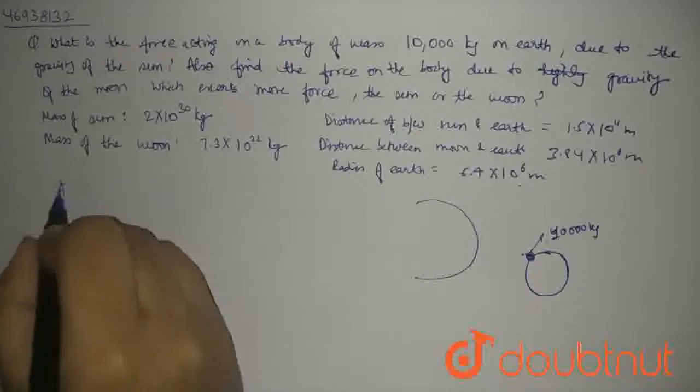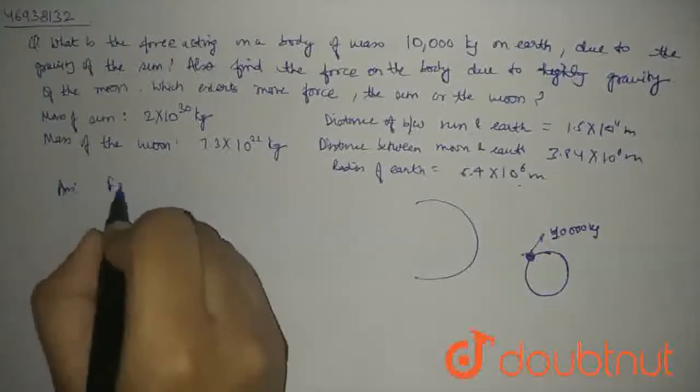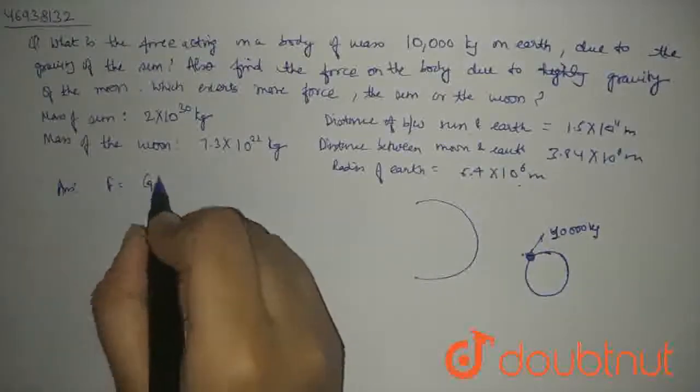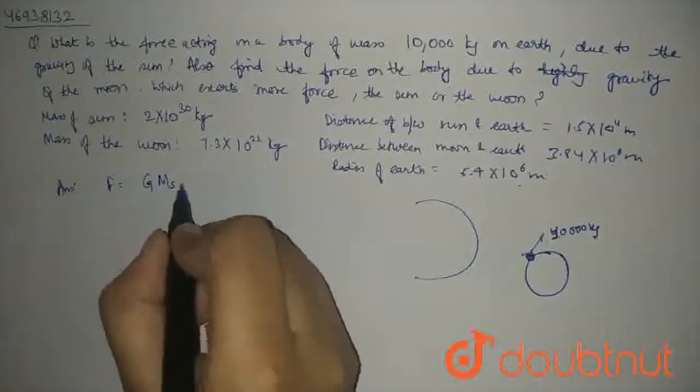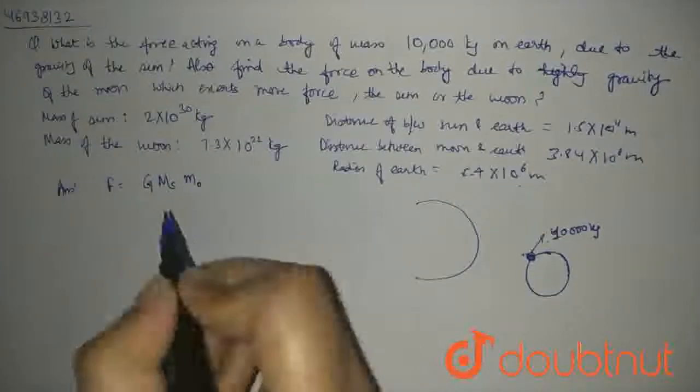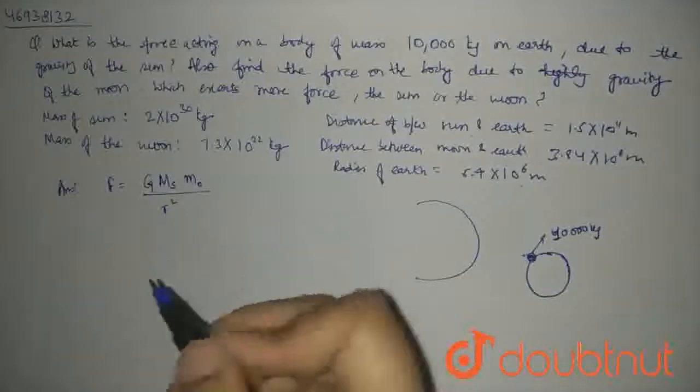We have the main formula, where force equals G times mass of sun times mass of object, divided by distance between them squared.